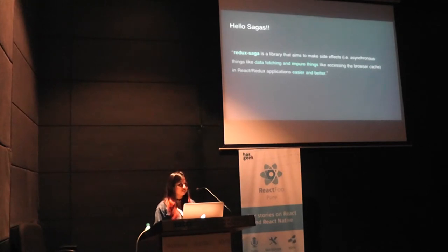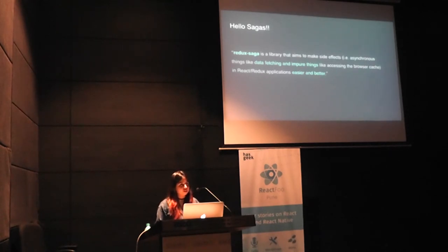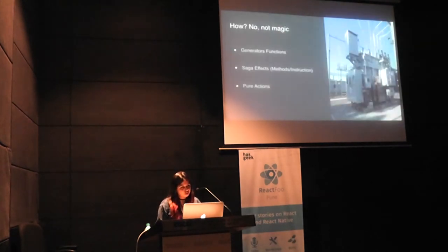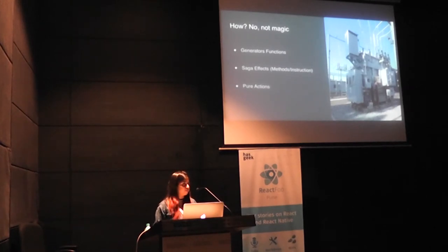I was wishing for something that could execute an API call, wait, and then continue the next task — something that could run, wait, then run again. Then I came across Sagas. Sagas gave me control over hitting an API, waiting, and then executing the next function. It's a middleware library that handles data fetching and impure tasks, makes code really easy to read and understand. It uses ES6 generator functions, has saga effects as instructions to the middleware, and keeps your actions pure in a separate file.